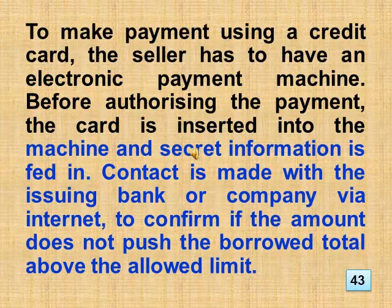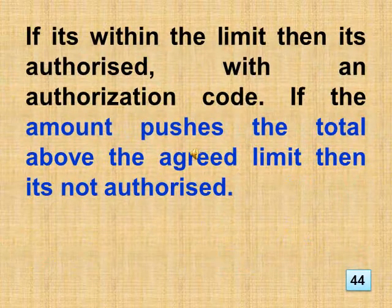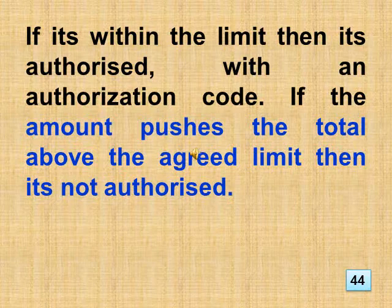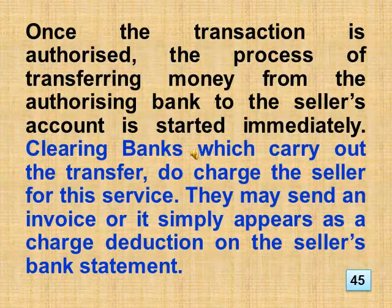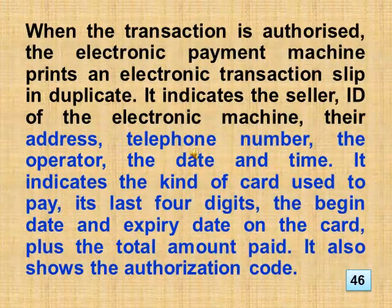To make payment using a credit card, the seller has to have an electronic payment machine. Before authorizing the payment, the card is inserted into the machine and secret information is fed in. Contact is made with the issuing bank or company via internet to confirm if the amount does not push the borrowed total above the allowed limit. If it's within the limit then it's authorized with an authorization code. If the amount pushes the total above the agreed limit then it's not authorized. Once the transaction is authorized, the process of transferring money from the authorizing bank to the seller's account is started immediately. Clearing banks which carry out the transfer do charge the seller for this service.